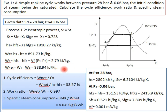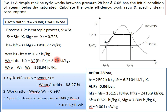We can see that pump work of 2.79 kJ/kg is very small compared to turbine work of 891.73 kJ/kg, which is why in some cases we neglect the pump work in simplified Rankine cycle equations. W_net = W_t - W_p = 891.73 - 2.79 = 888.94 kJ/kg.